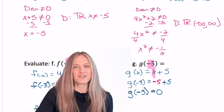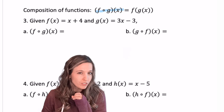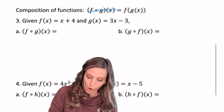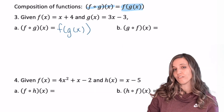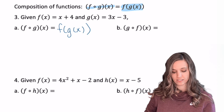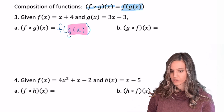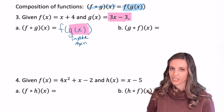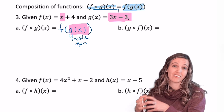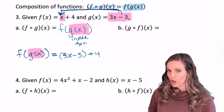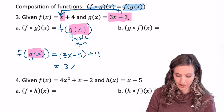Now, composite functions. A composition can be notated as f with an open circle g of x, meaning f of g of x. We prefer the written-out form so we can clearly see which function is being input into the other. For f of g of x, the inside function is g of x, which is 3x minus 3. That gets plugged into the x position of f, giving 3x minus 3 plus 4, which simplifies to 3x plus 1.